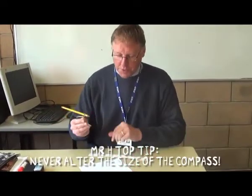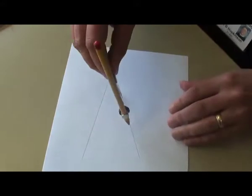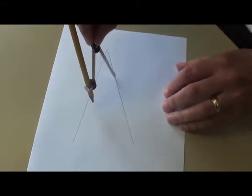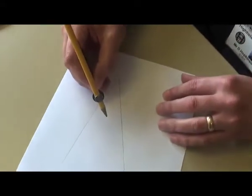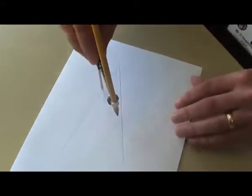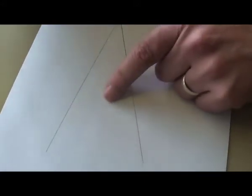So take the point of the compass now to where the first nick is that you've made, and draw a circle in the middle of the angle. Now pick up your compasses, move them to the other nick that you made, and do a circle as well. And make sure they intersect like we did in lesson one.